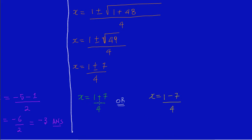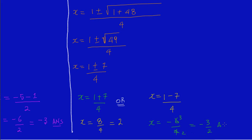X is equal to 1 plus 7 — we know that 1 plus 7 is 8 — so x is equal to 8 over 4, and we know that 8 divided by 4 is equal to 2. So x equals 2. And here, 1 minus 7 gives us x equal to negative 6 over 4, which simplifies — 2 into 4 goes 2 times and 2 into 6 goes 3 times — so we have negative 3 over 2. Those are our two answers.